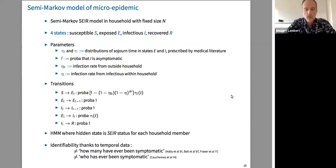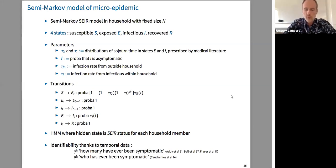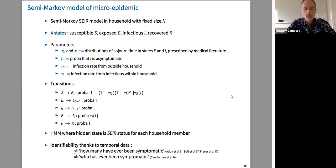We have a first result proving that this model is identifiable, including asymptomatic frequency. This identifiability is linked to having temporal data. It differs from two other approaches: one counts the number of people who were symptomatic at some point, and another only knows who was symptomatic without temporal resolution. We will leverage this temporal data to estimate all parameters, and will keep you informed as soon as we get results.